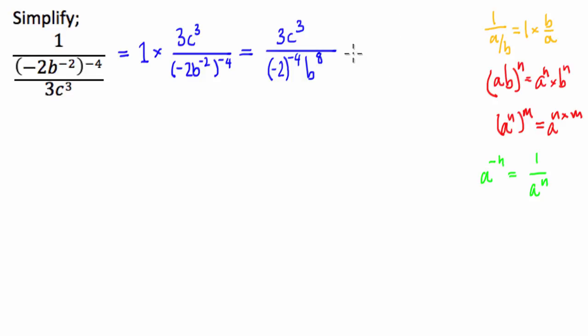So what I'm going to do is from here, I'm going to have 3 times, brackets, negative 2, all to the power of 4, c cubed, all divided by b to the power of 8. Great. Now let's multiply out this bracket.